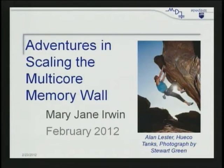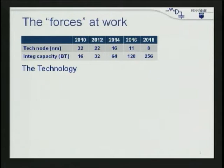I'm going to talk about adventures in scaling the multicore memory wall. The forces at work we need to think about is that technology is continuing to scale — Moore's law is still holding. In 2012, we're at the 22 nanometer node, with fab lines running at 22 nanometers giving us about 32 billion transistors capacity on a single chip. By 2014, hopefully we'll go to 16 nanometer nodes and double the number of transistors. If it makes it to 8 nanometers, that'll be very interesting — what we're going to do with 256 billion transistors.